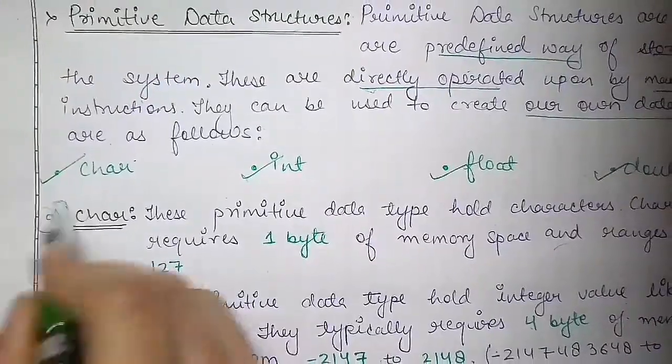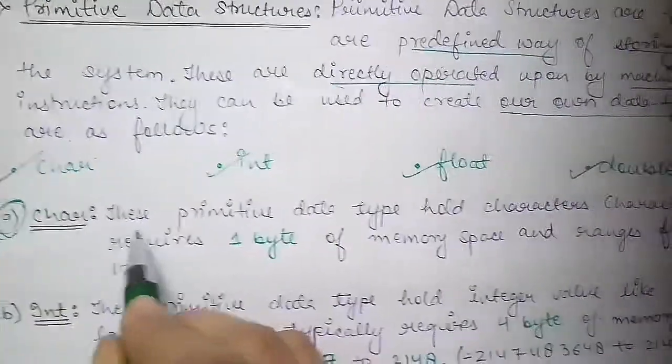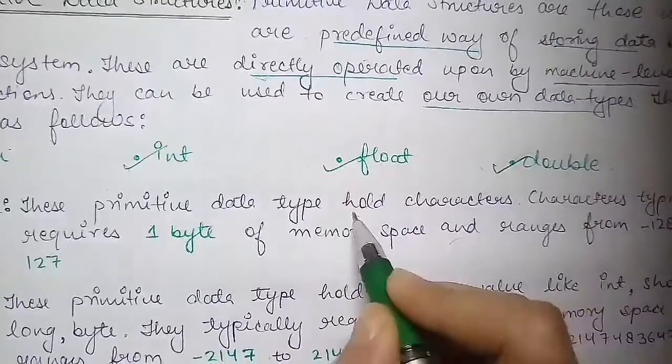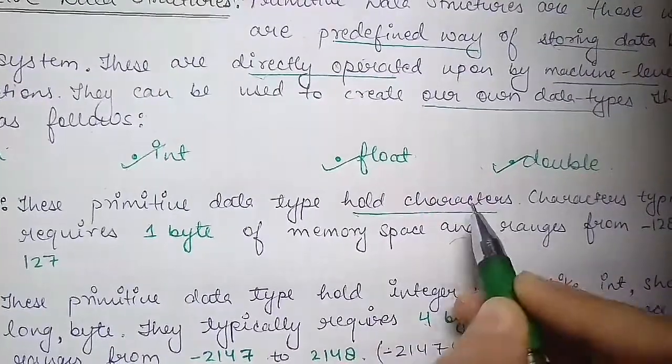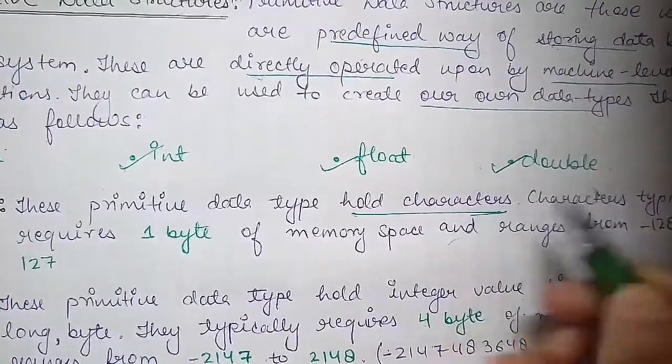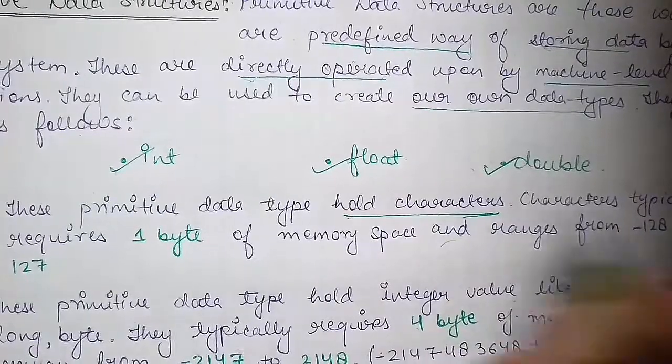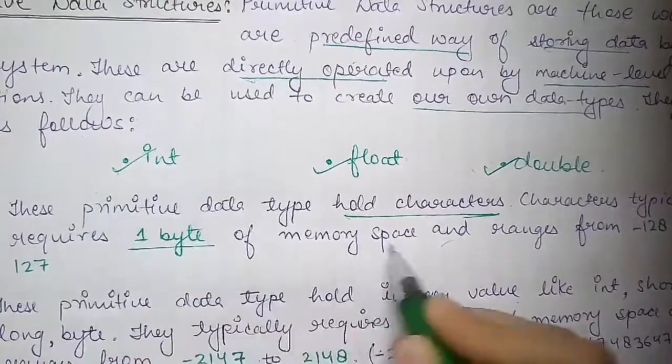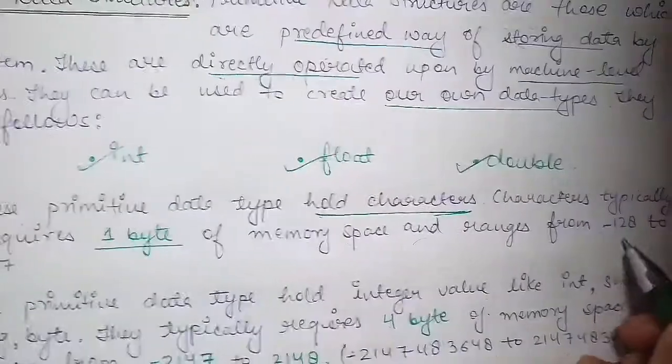What is character? Character data structure holds characters. These characters store basically string characters. Typically requires 1 byte of memory space and ranges from minus 128 to 127.